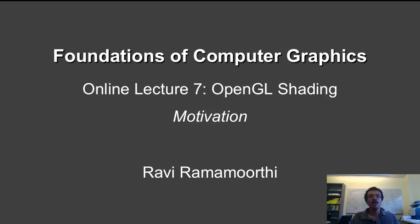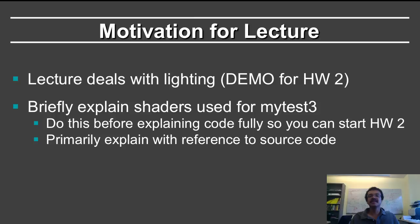In this lecture, we are going to study shading in OpenGL, which is critical in order to do homework 2, and gets you excited about the way in which you can actually light and shade objects in a scene. In particular, this lecture deals with lighting, and we'll briefly explain the shaders that we used for the myTest3 program that you compiled for homework 0. We'll do this before explaining the full code base for myTest3, so that you have all of the material you need to get started on homework 2.